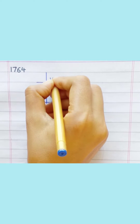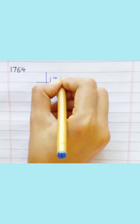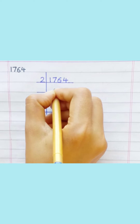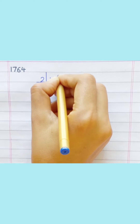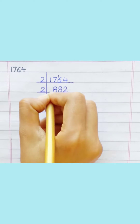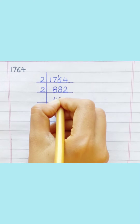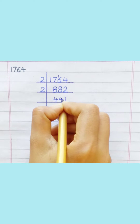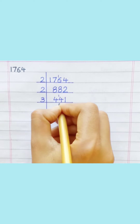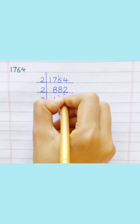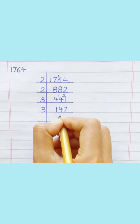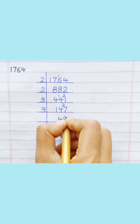1,764. 2 8's are 16. 2 2's are 4. 2 4's are 8. 2 1's are 2. 3 1's are 3. 3 4's are 12. 3 7's are 21. 3 9's are 27.